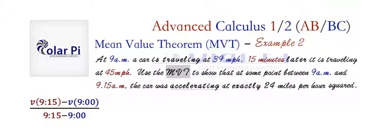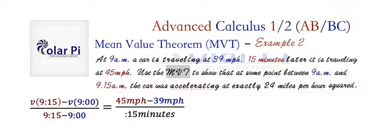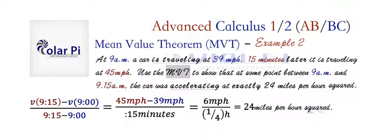And if we simplify this first, plug in the given information. And next, notice the 15 minutes is a quarter of an hour. So we use that and simplify. And if we do, then we're going to get 24 miles per hour squared. We have miles per hour in the numerator divided by hour. That's per hour per hour or per hour squared.